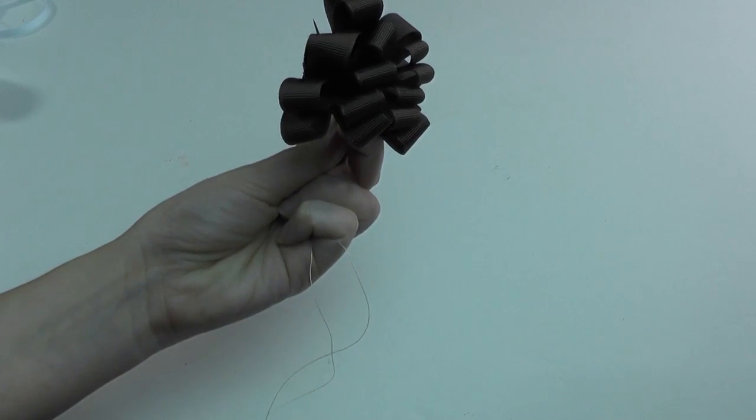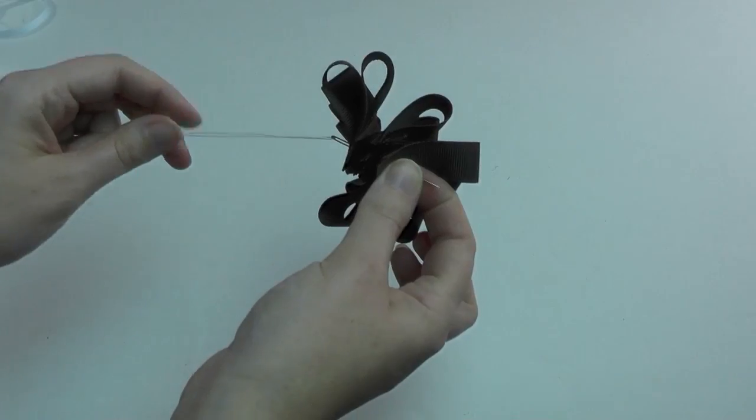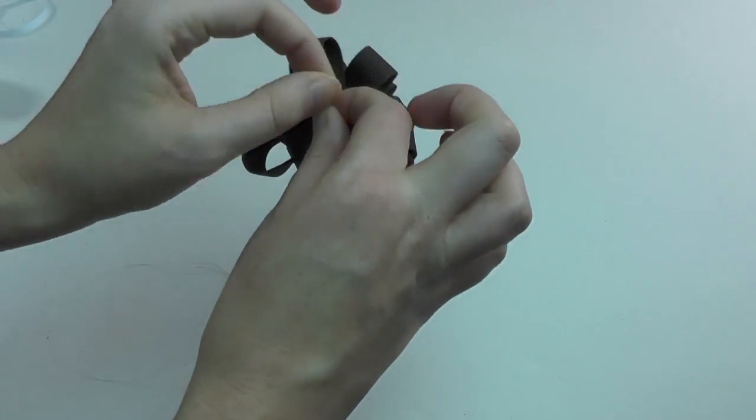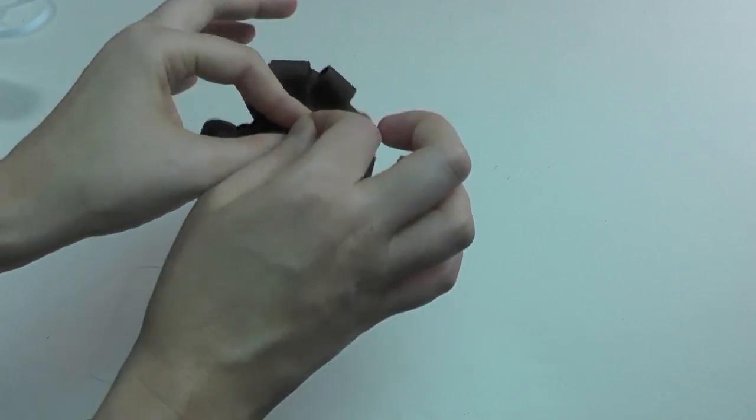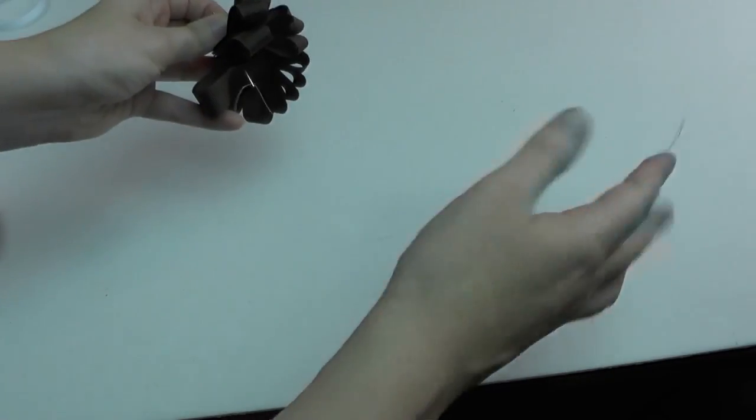Once you have all of your pieces secure to your needle and thread, you're just going to hold the top now. You don't want them coming above this needle here. And we're going to start bringing the loops down towards our knot end.